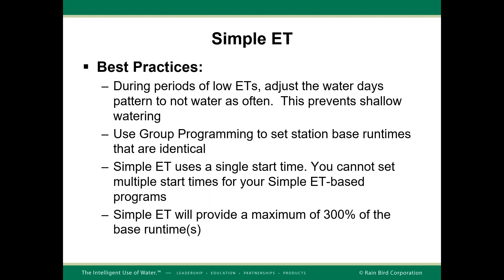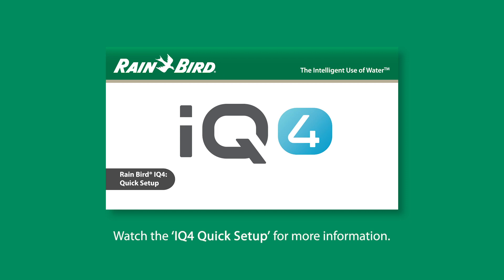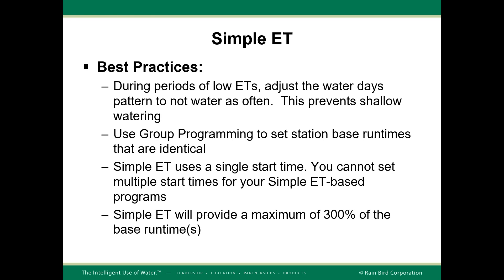During periods of low ET, adjust the watering day pattern to not water as often to prevent shallow watering. Use group programming to set station-based runtimes that are identical. Simple ET uses a single start time — you cannot set multiple start times for Simple ET-based programs. If there is a concern for puddling and runoff, you can use the cycle and soak feature in each program. Simple ET will provide a maximum of 300% of the base runtime, so be aware of this for periods of very high ET values and for programs with cyclical run days.